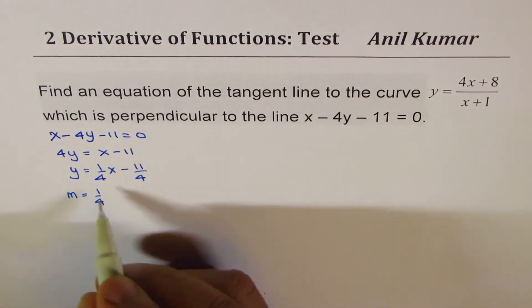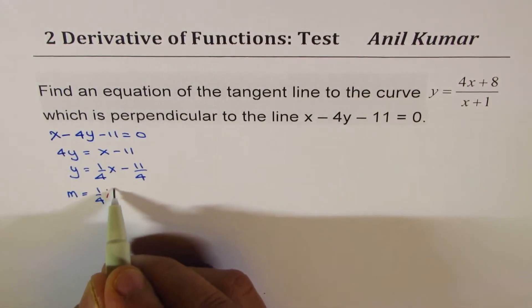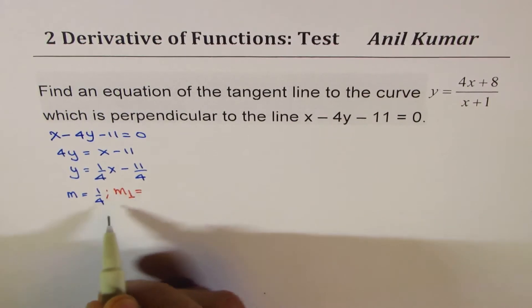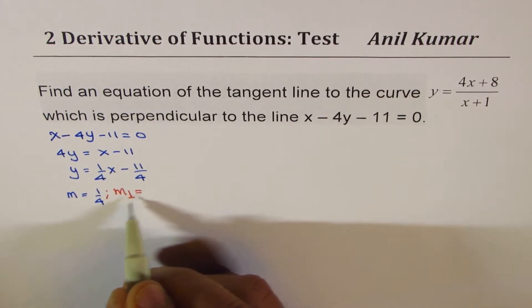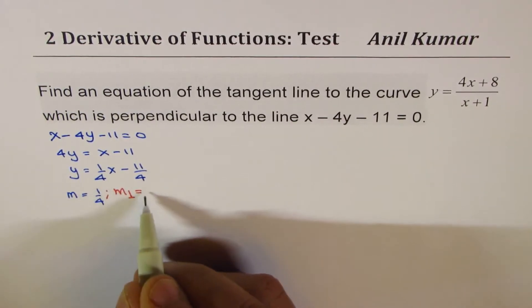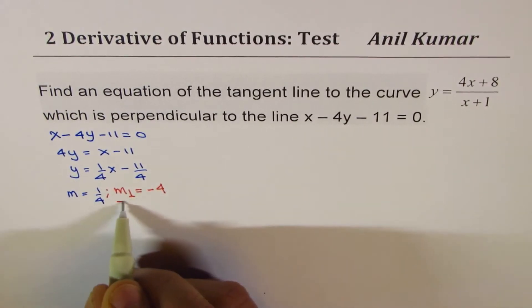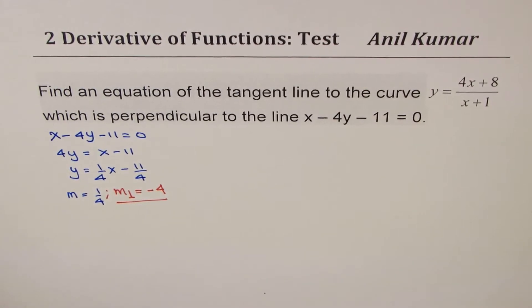Now, what is the slope of the perpendicular line? The slope of the perpendicular line will be the negative reciprocal, which is negative 4. So this is the slope we need.